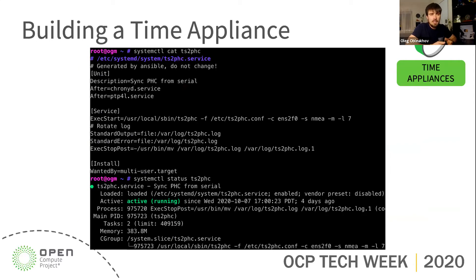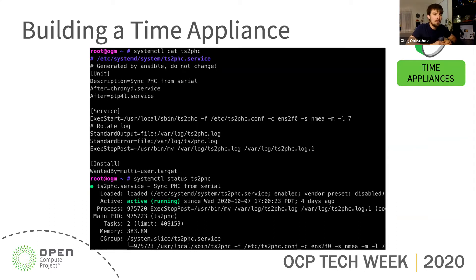The first thing we implemented was a server called OGM — Open Source Grandmaster. We created a service called TS2PHC, which copies data from the GNSS receiver to the PHC of the network card. And probably even more importantly, the config says 'generated by Ansible,' meaning those configs are automatically generated. We were very glad when we finally managed that, because it means we can manage it with Ansible, Chef, or whatever tool, and properly monitor configuration and more.